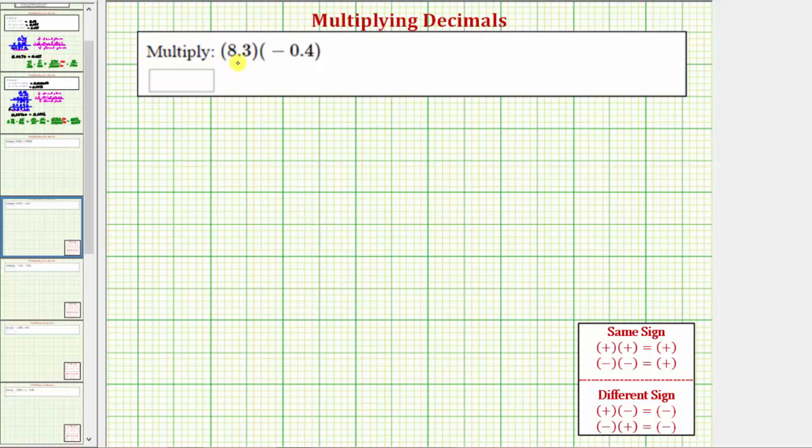For us to multiply, we have positive 8.3 times negative 0.4. Let's first determine the sign of the product. Well, because we have a positive times a negative, we know the product will be negative. Let's go ahead and record the negative sign in our product here.